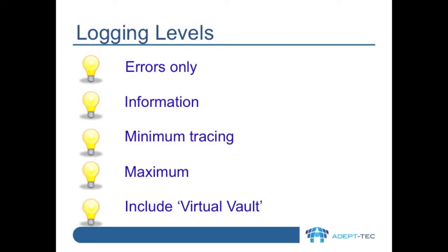The Enterprise Vault Outlook add-in has a number of logging levels, which results in data being written out to a log file. This log file is similar in some ways to Dtrace, and the logging levels are similar to those as well. There are four logging levels as shown on this slide. The data written to the log file gets progressively more verbose as you go down through the list. The last entry in the list, called Include Virtual Vault, is an extra checkbox in the UI, as you see here.